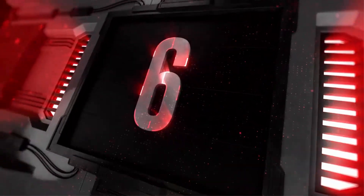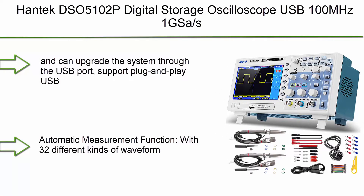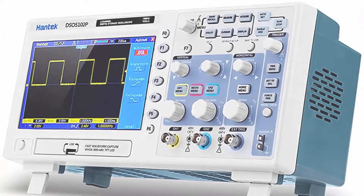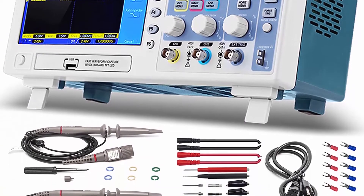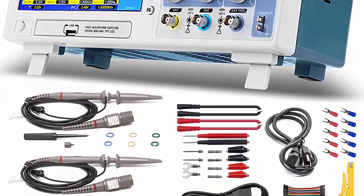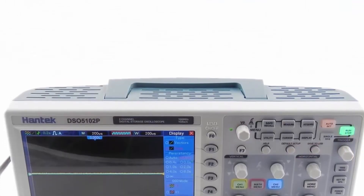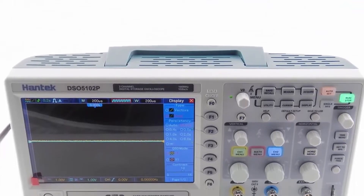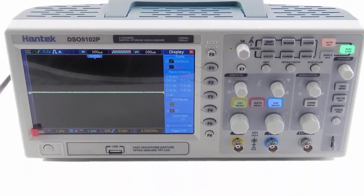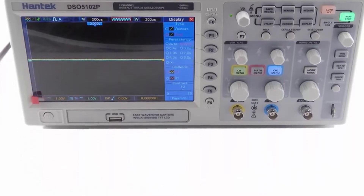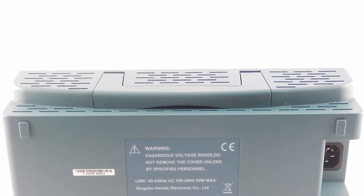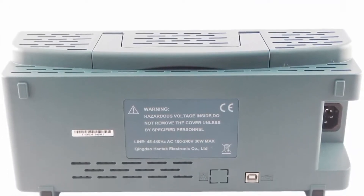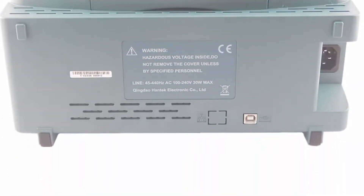Top 6: Hantek DSO-5102P Digital Storage Oscilloscope — USB, 100 MHz, 1 GSA/s, 40K, 2-Channel. Can upgrade the system through the USB port, supports plug-and-play USB storage devices, and communicates with the computer for remote control via USB. Automatic measurement function with 32 different kinds of waveform parameters, FFT standard, manual/tracking/automatic cursor test function to achieve more accurate measurement.